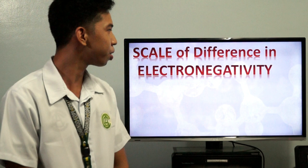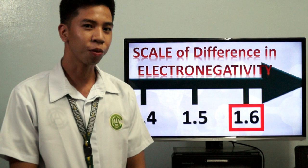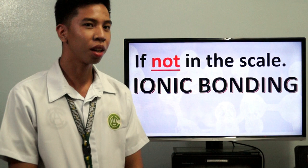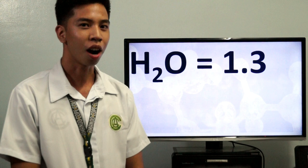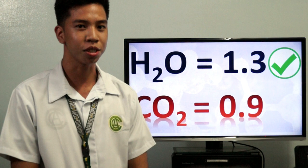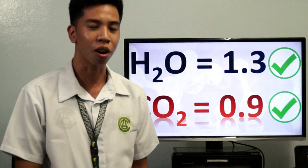There is a scale of difference in electronegativity. We consider that the polar covalent range begins at 0.5 to 1.6. If the difference is not in this scale, we consider it ionic bonding. For H2O, the difference in electronegativity between hydrogen and oxygen is 1.3 — within the scale. For carbon dioxide, between carbon and oxygen it is 0.9 — also within the scale. So both water and carbon dioxide fall within the scale, meaning we can determine them as polar or non-polar.